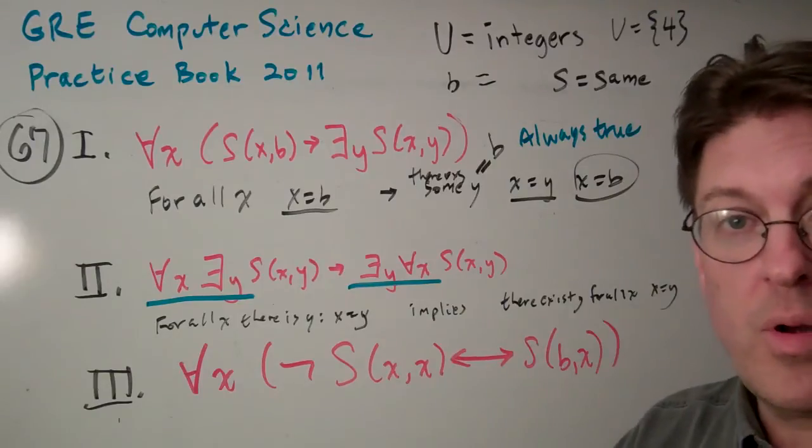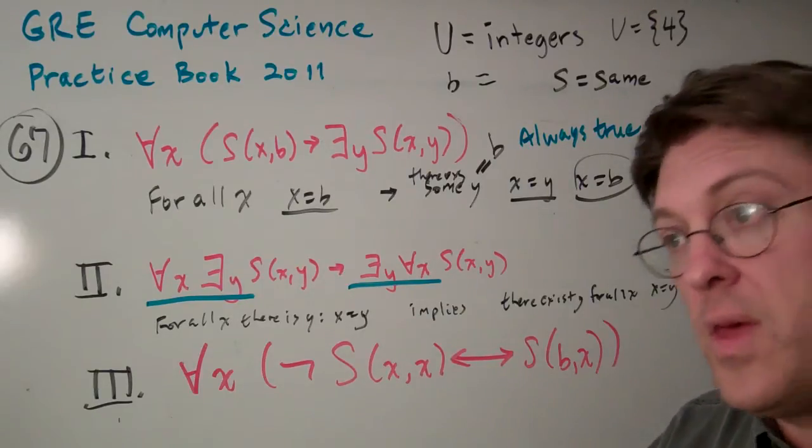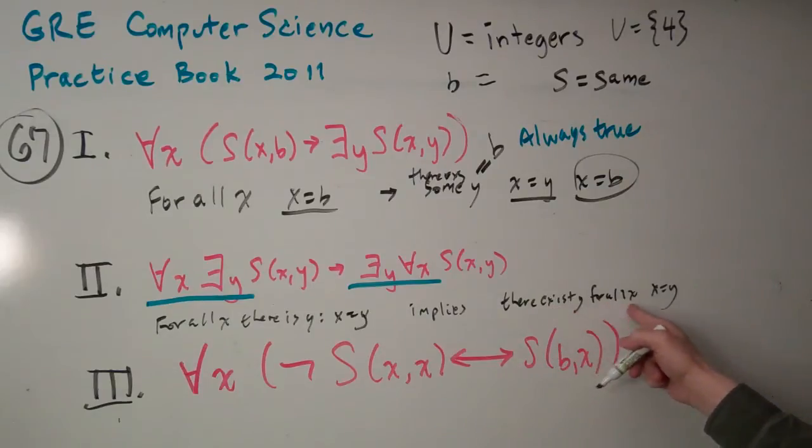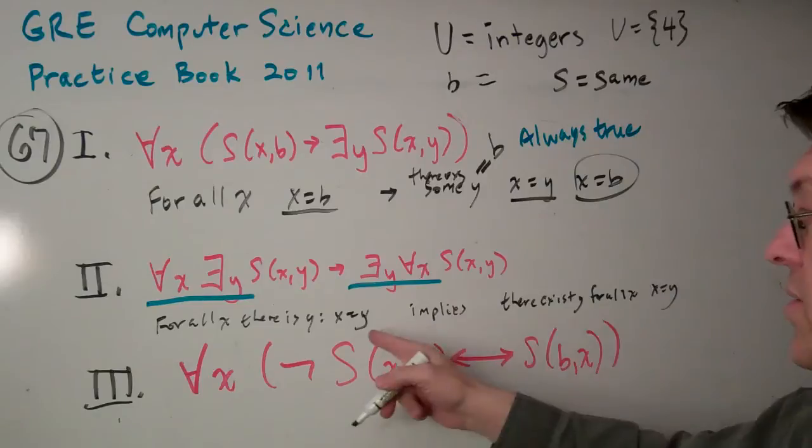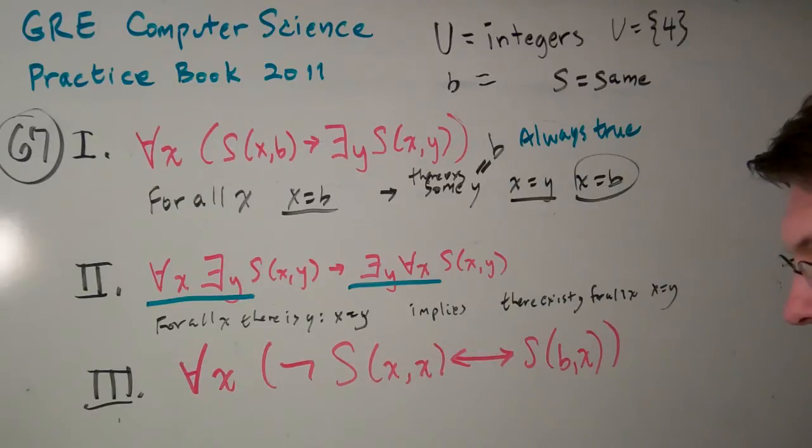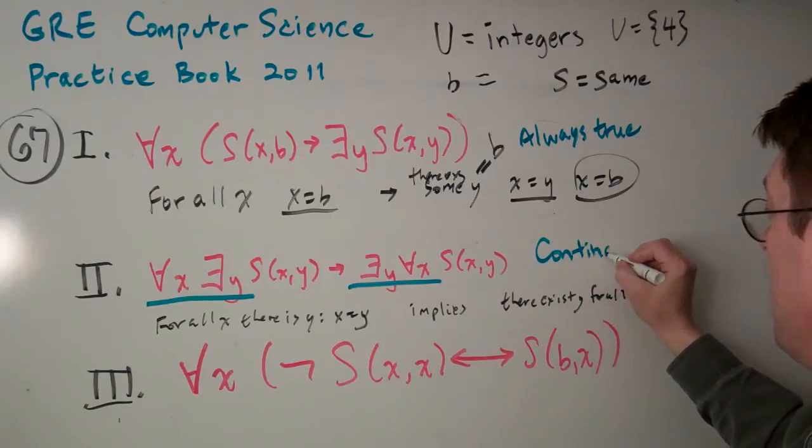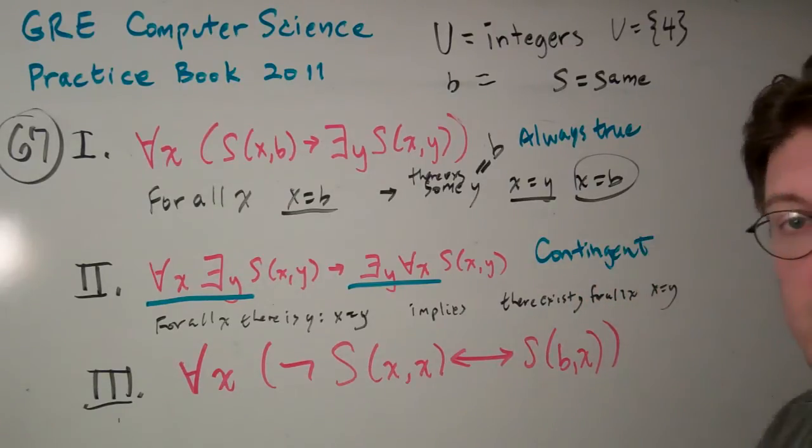If the only number in the universe is four, then sure, for all X, there exists a Y that for all X, X equals Y. Because there's only one number. But generally, that's not the case. So this one is contingent on the universe. It's contingent.